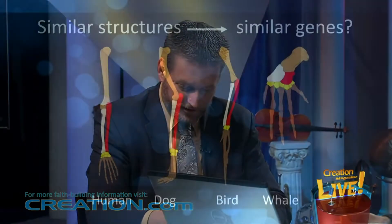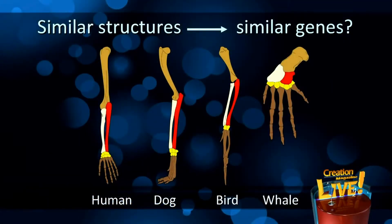Another serious problem for evolution: the front appendages of many animals are said to be homologous. If evolution is true, the genes that code for those structures should also be similar — if you've got similar things you should have similar coding for those structures.